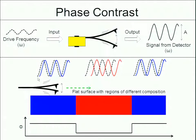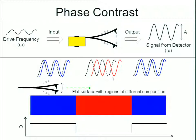Here's a great example. On an extremely smooth surface with two different materials — a blue region and a red region — we have a drive frequency and some type of output. Going over the blue sample, we observe a small phase lag. Over the red sample, we have a much larger phase lag, and over the blue sample again, that small phase lag returns.